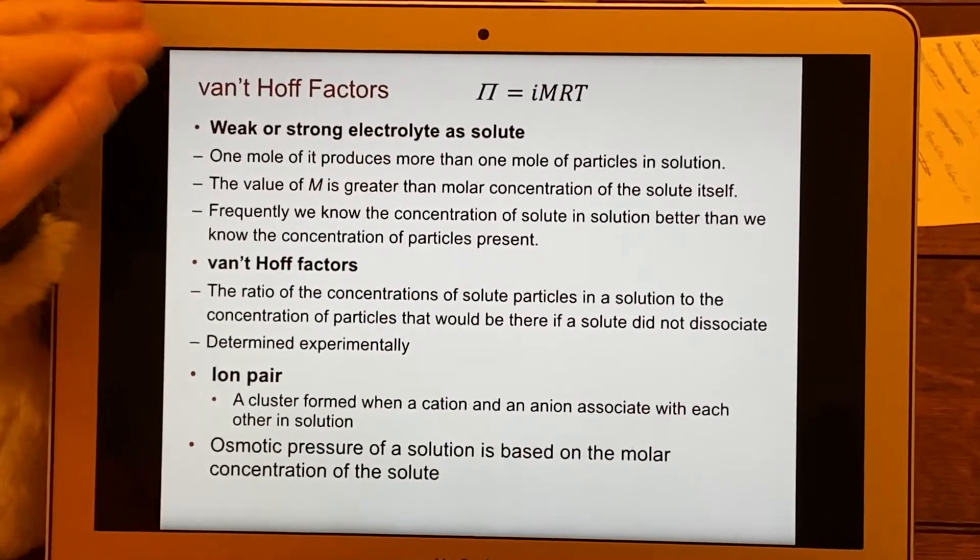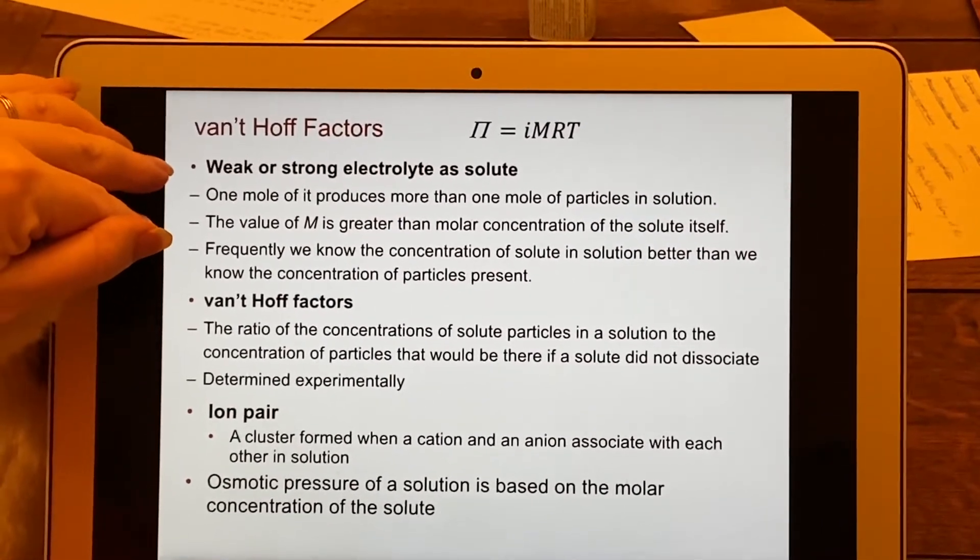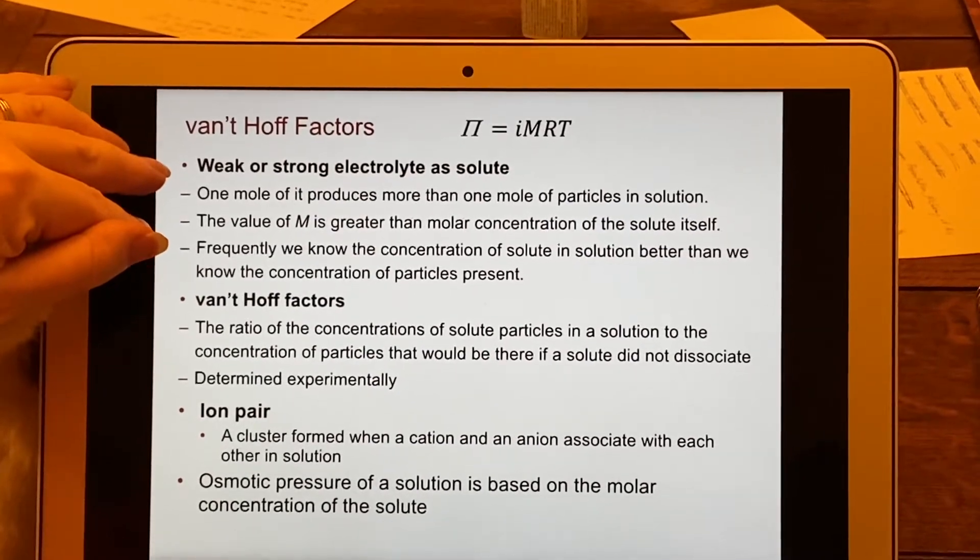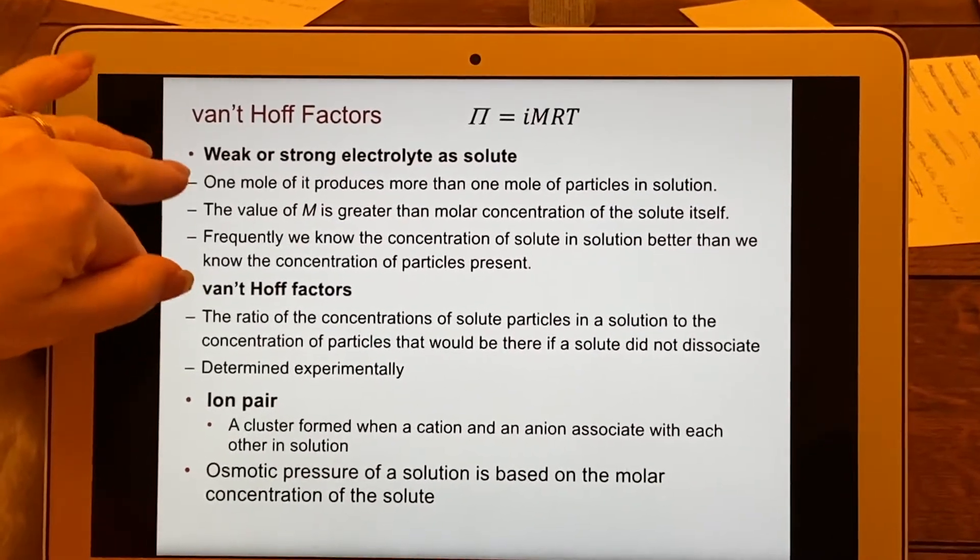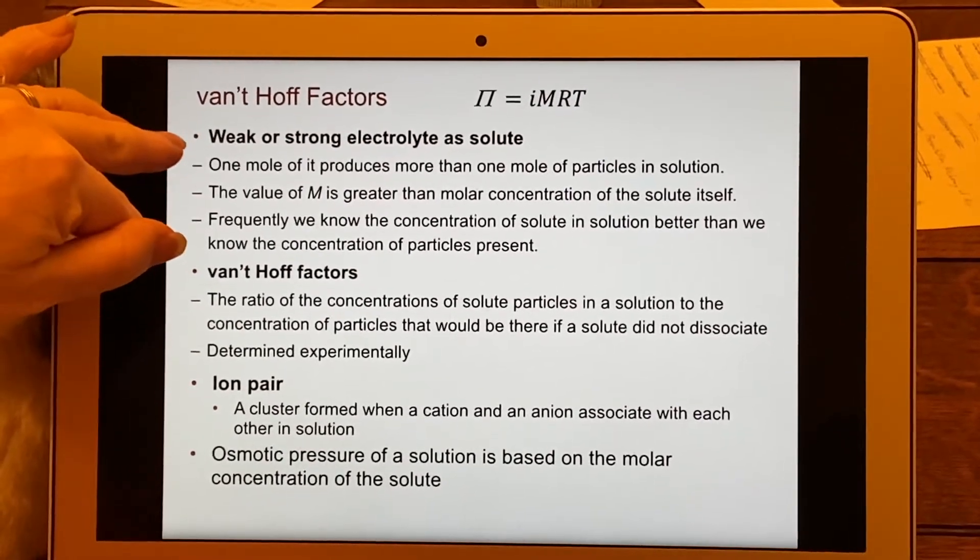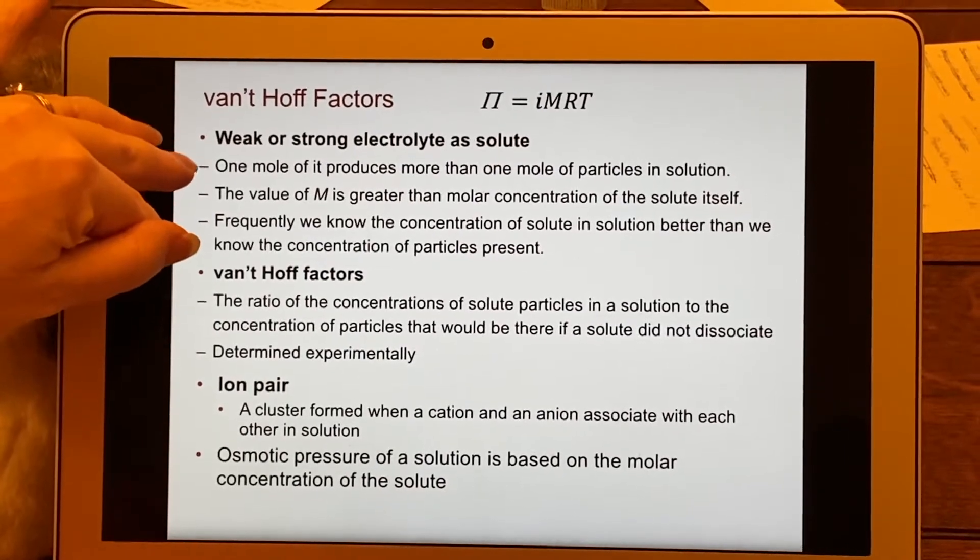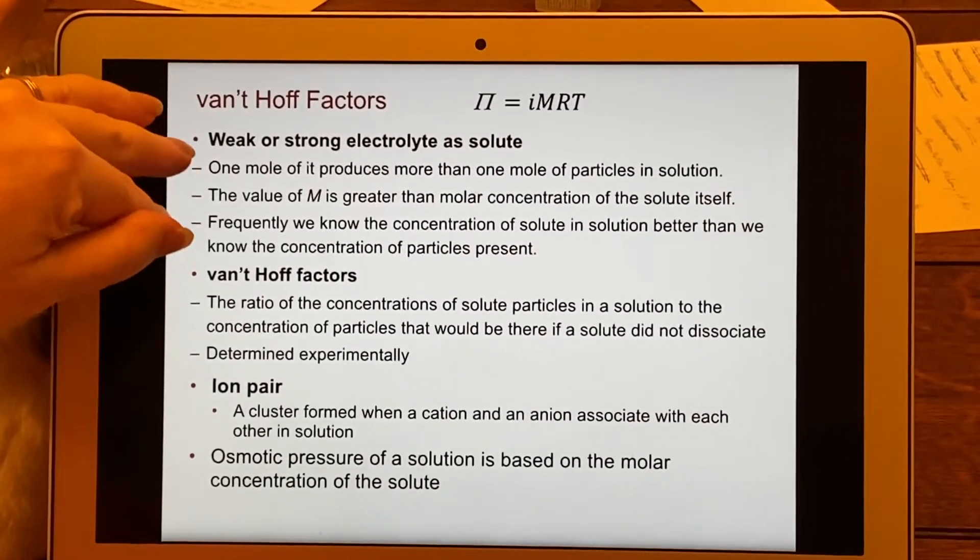One of the other things we talked about before was whether something could be an electrolyte in solution. If you have something that is an electrolyte, automatically that means there have been ions formed, and you can know then that the van't Hoff factor is going to be higher than the number one.